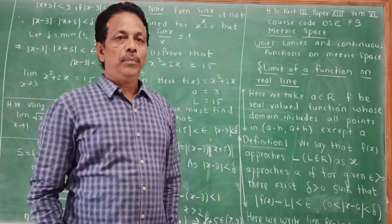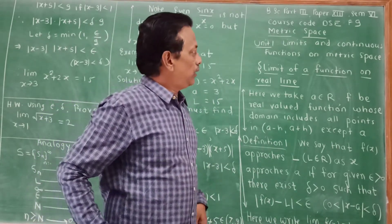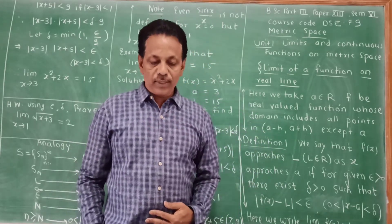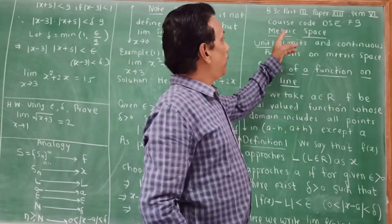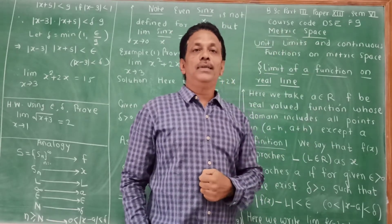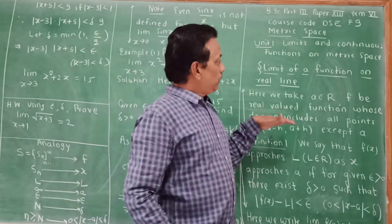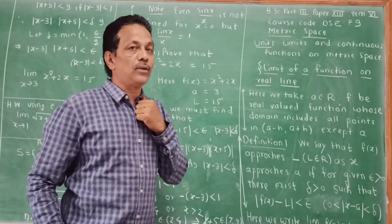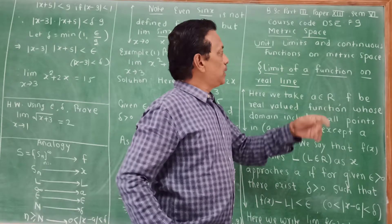Hello, this is the first video regarding BSE part 3, semester 6th, and paper number 13 in the Choice Based Credit System. The course code is DSE F9 and the name of the paper is Matrix S. This is the first lecture, Unit 1: Limits and Continuous Functions on Metric Space.